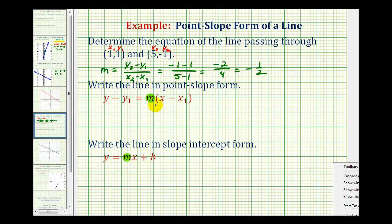And now we have everything we need to write the point-slope form of a line. Remember X sub 1, Y sub 1 is any point on the line. So we actually have a choice. We can use this first point or the second point to write the point-slope form of a line.